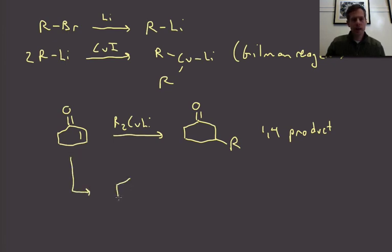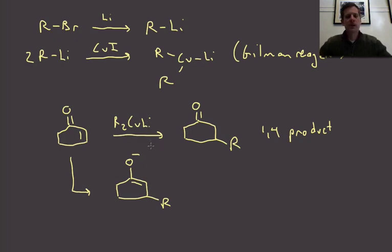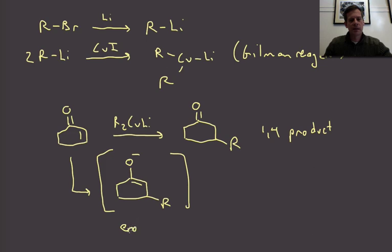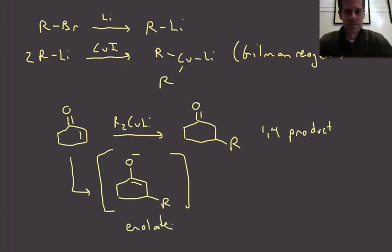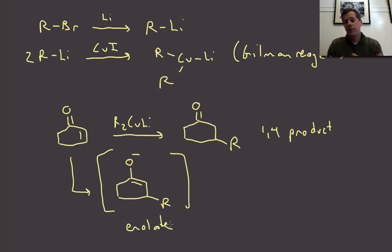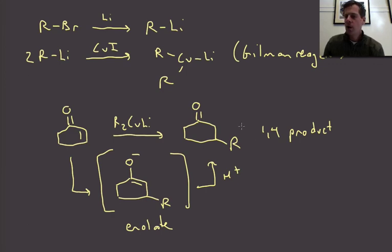It's worth pointing out what the intermediate is here: we've added the organo species in a conjugate fashion, and the intermediate has the counter ion — essentially a lithium — with the negative charge on oxygen. This intermediate is called an enolate, a functionality we're going to learn about in detail very soon, and it can potentially do other chemistry. For now, we just work up with acid, protonating at the carbon to get the carbonyl back. That's conjugate additions — we'll learn more in future lectures, but now we have a way to add groups to the beta position of alpha-beta unsaturated carbonyls.